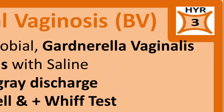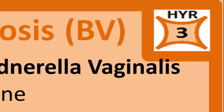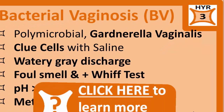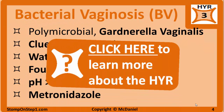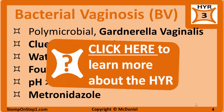You can see in the top right corner that I give BV a high yield rating of 3 on a scale from 1 to 10. If you want to learn more about this rating system, you can go to my website or click on the orange box here if you are watching the video on a computer.